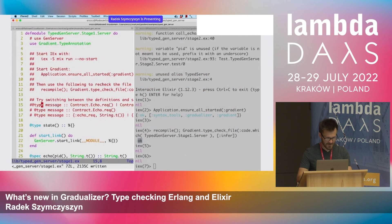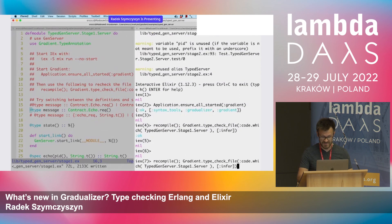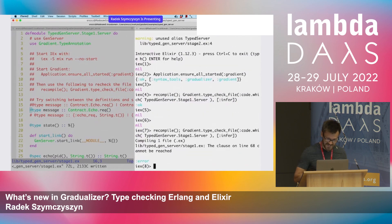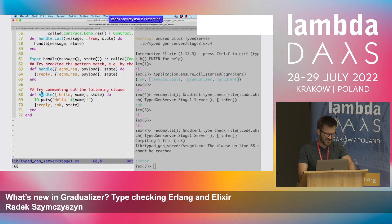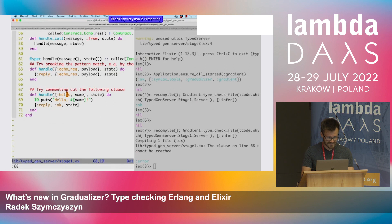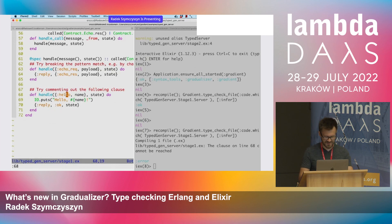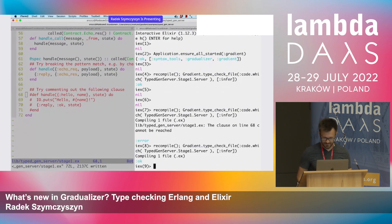Commenting out that type definition and using one that lists only one of the message types, then recompiling and type-checking, we get an error: 'the clause on line 68 cannot be reached.' Jumping there, we see it's the function handling a hello message — the one we just commented out. The type checker discovered dead code. Commenting it out and type-checking again gives us OK.